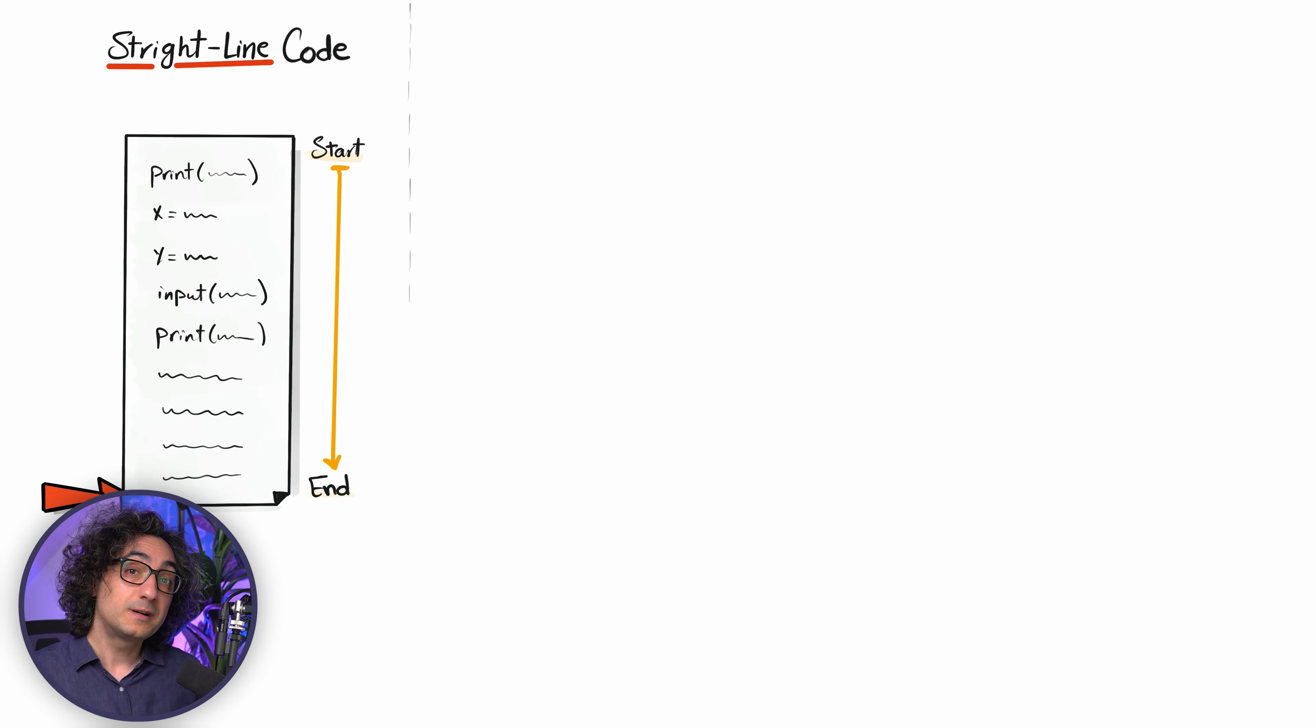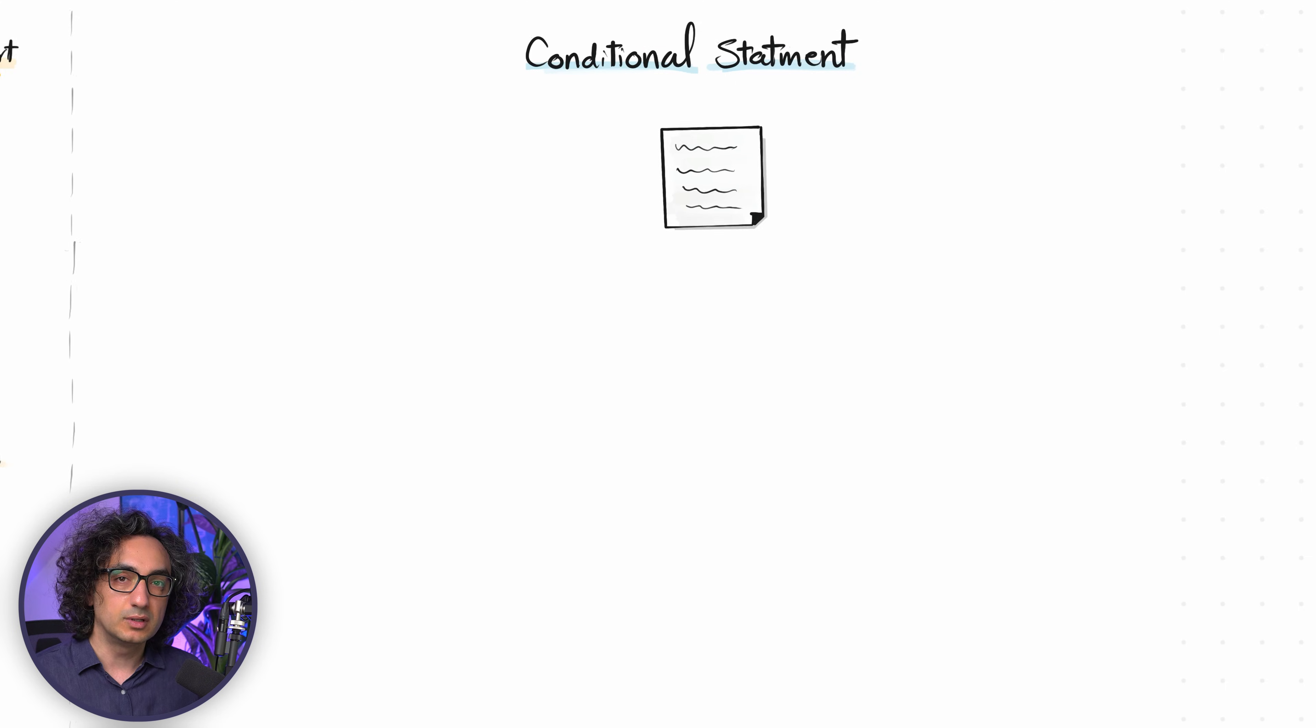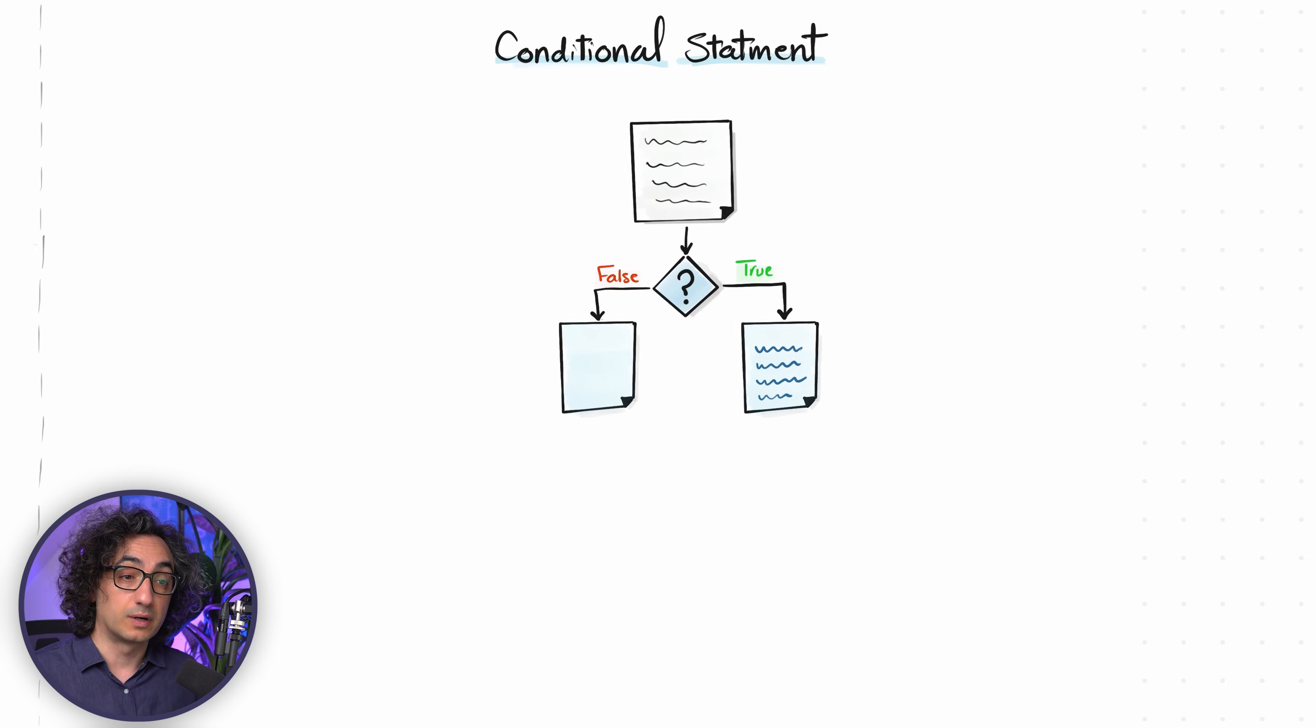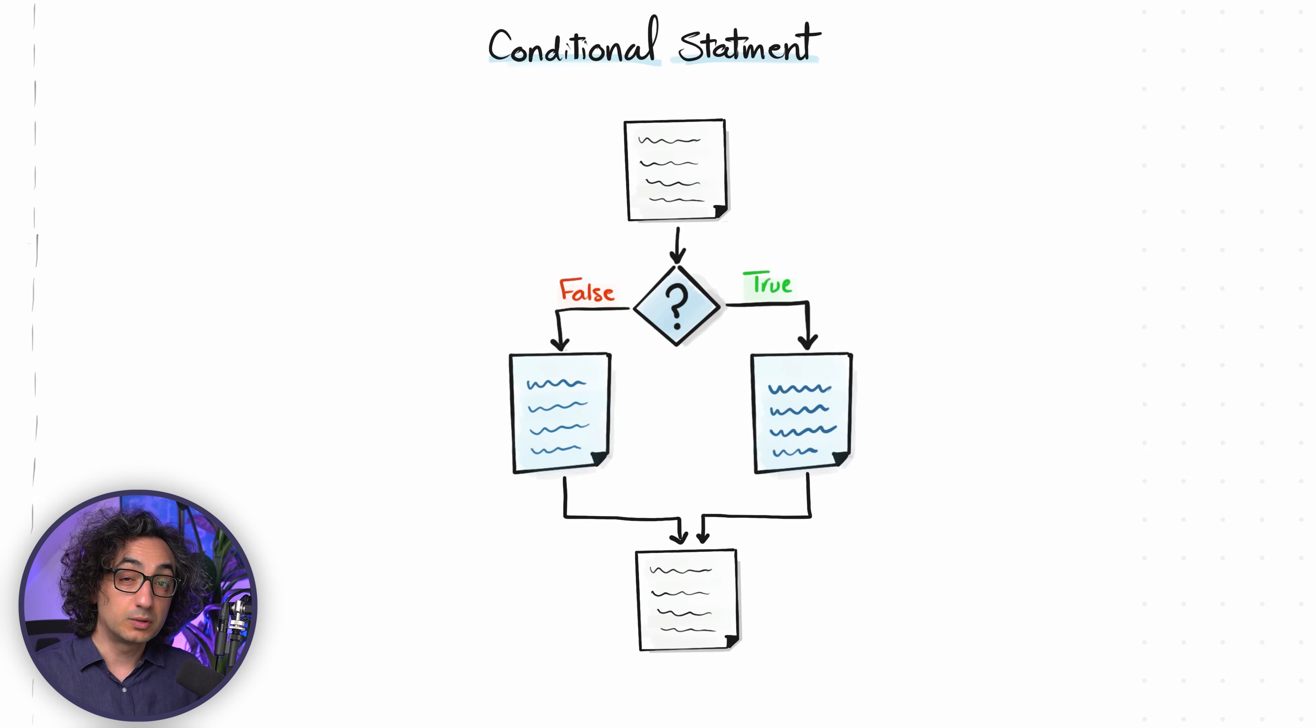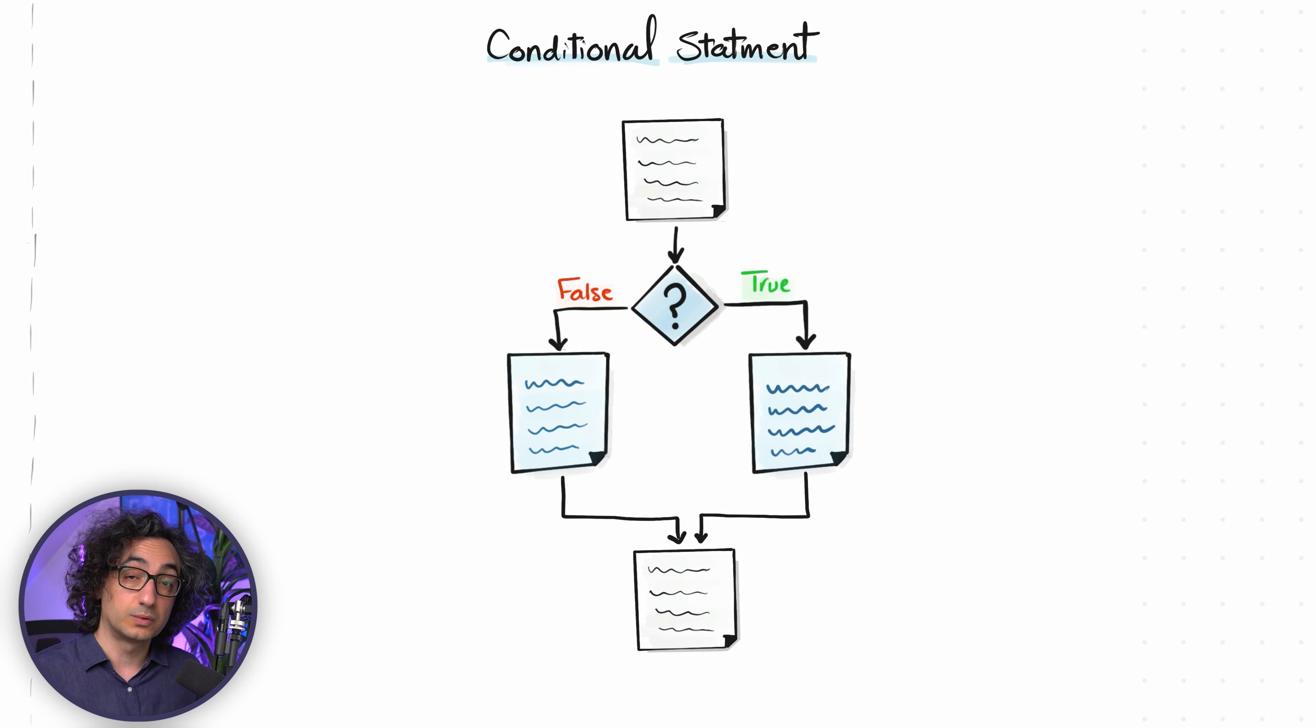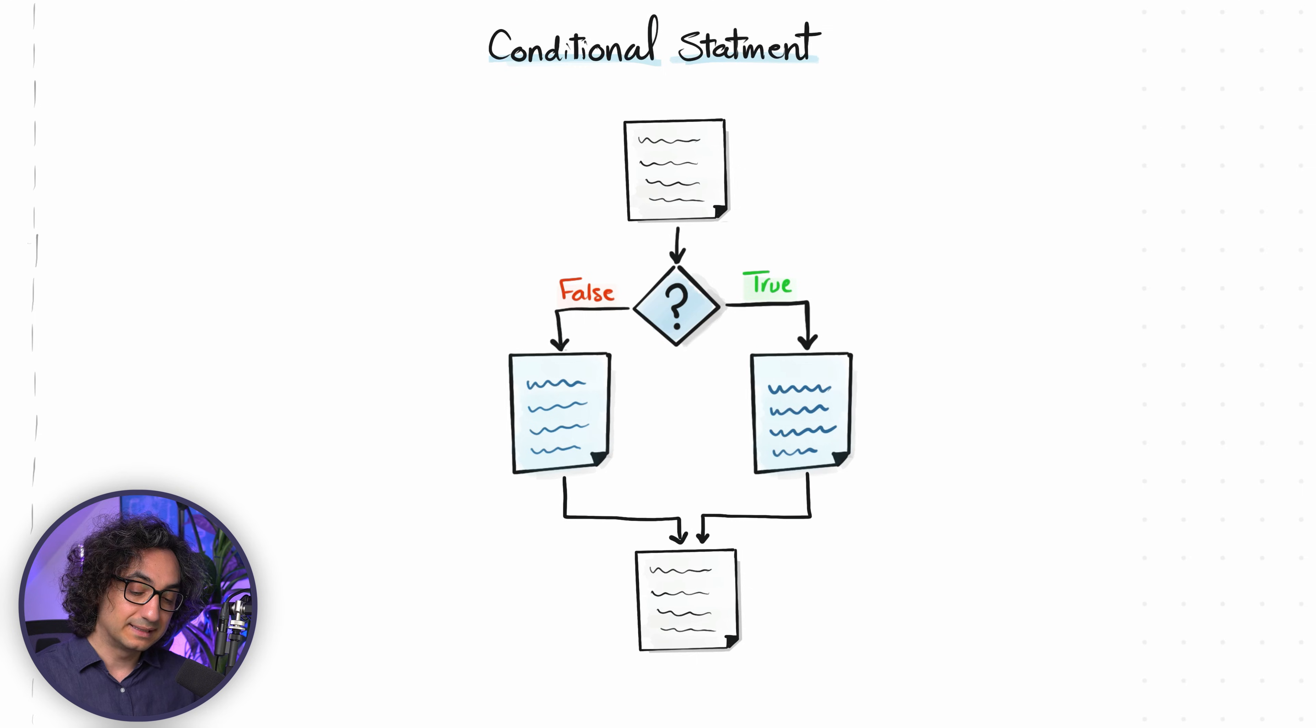The first way to control the flow of your code is by building something called conditional statements. Let's say that you start writing your code as normal, and then you come to a point where you have two blocks of code, one on the left and one on the right. But you don't want to execute both of them, so you want to execute one of them based on a question. That means you build a question inside your code - we call it a condition. Based on the answer, if the condition is true, you go to the right block of code, but if the answer is false, you go to the left side.